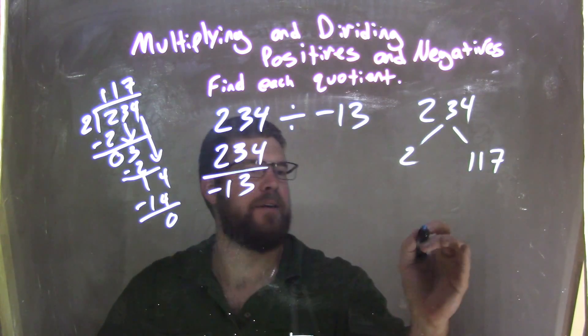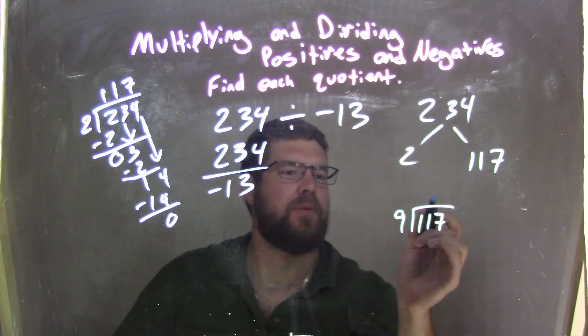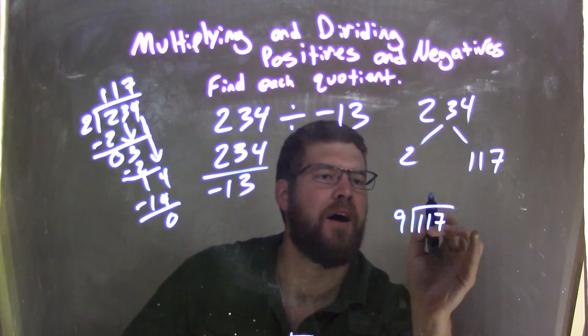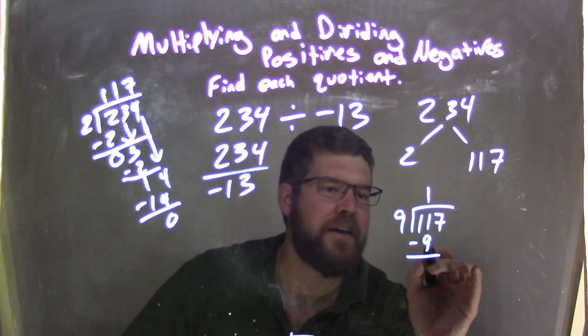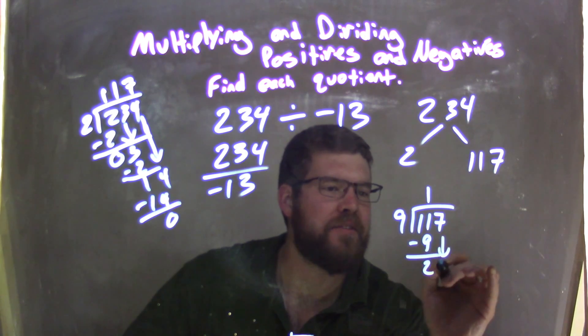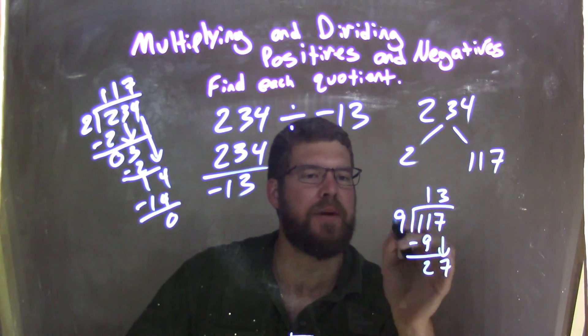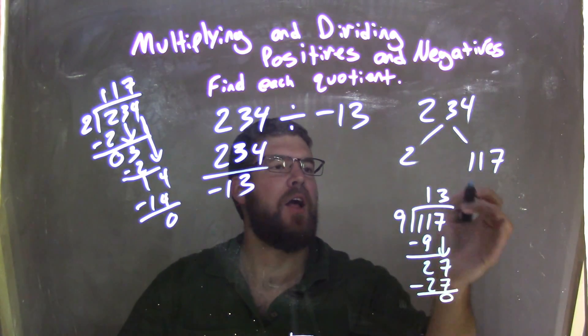I'm going to write right here, 117, does 9 go into it? And I kind of know this ahead of time, but 9 goes into 11 one time, 1 times 9 is 9, we subtract it, 11 minus 9 is 2, bring down this 7. 9 goes into 27 three times, 3 times 9 is 27, subtract them, we get 0, we're good, 13.